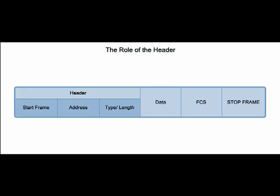The frame header contains the control information for the specific logical topology and media used. Frame control information is unique to each type of protocol, but typical frame header fields begin with the start frame, which tells devices along the way that a frame is coming. Next is the address portion, which is the data link layer source and destination address. Finally, the type/length field is an option that states the kind of data or the length of the frame. Depending on the protocol being used, additional fields may also be present.